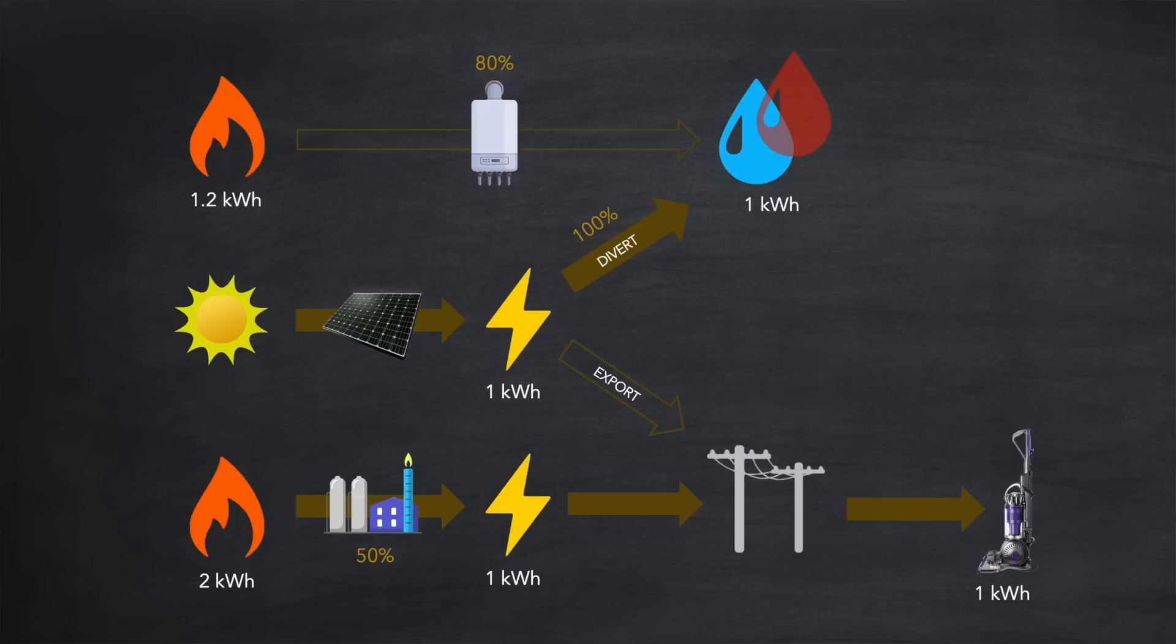So in scenario A, using these figures, if you divert instead of exporting, although your personal carbon footprint has reduced, overall, you're actually causing 60% more fossil fuel to be burned. The very opposite of what you intended. So exporting is better, and you're getting paid for it at the same time.